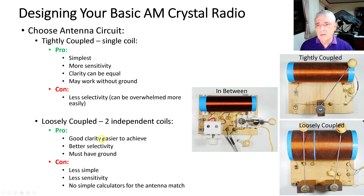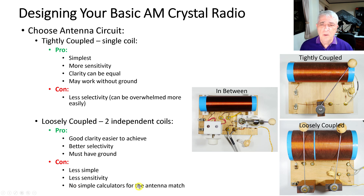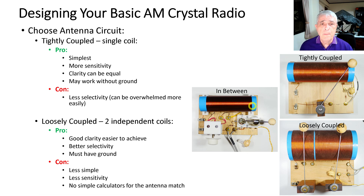Loosely coupled has good clarity that's easier to achieve and better selectivity, so loud stations don't talk over quieter ones as much. The cons are it requires a ground, it won't work without one, it's less simple — you need two coils and two wipers — it's slightly less sensitive, and there are no simple calculators for sizing the antenna match coil. There's also a hybrid design where the first 20 windings handle the antenna and the rest handles the headphone and RC circuit, all connected together.